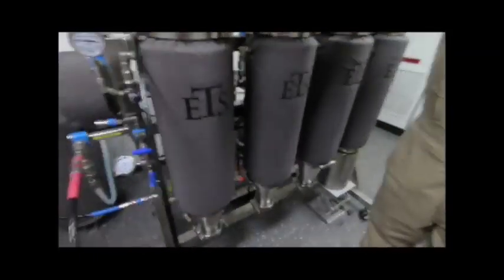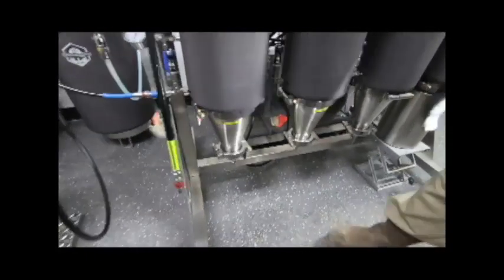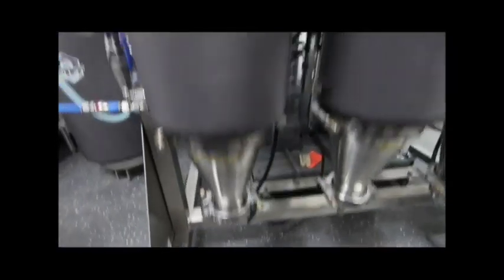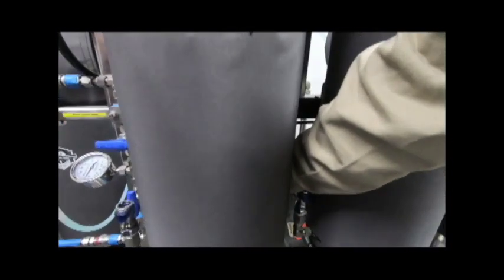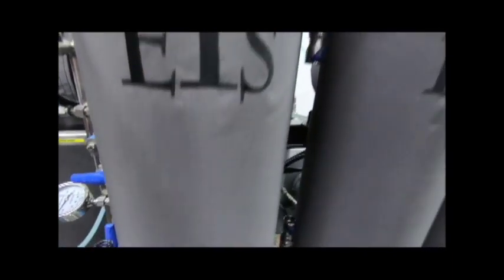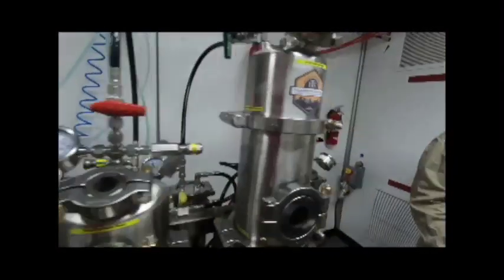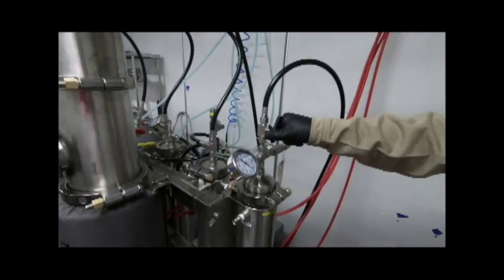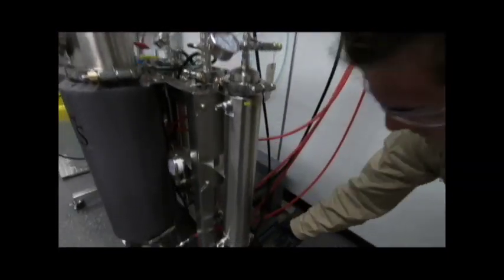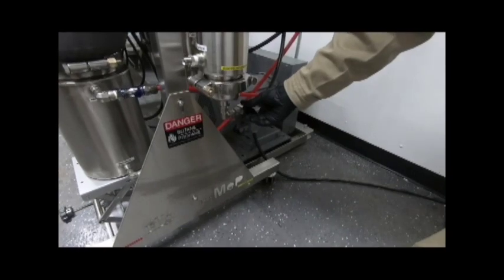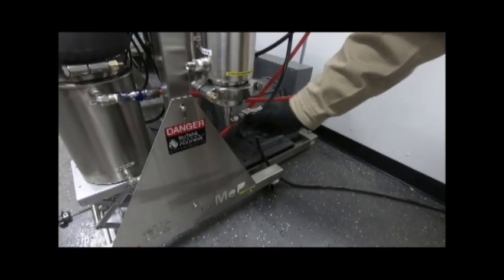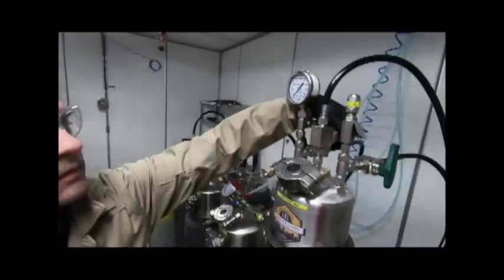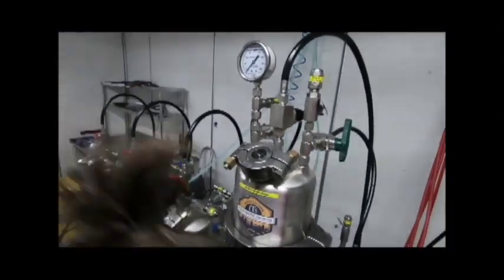Open dual green valves at the bottom of extraction vessel number one. Open black valves at top and bottom of auxiliary vessel located at the far right of the extraction platform.